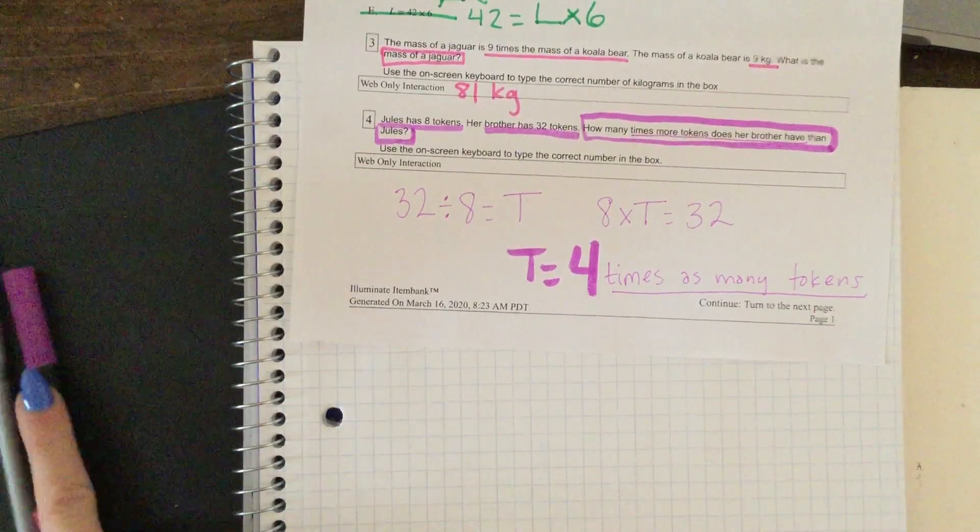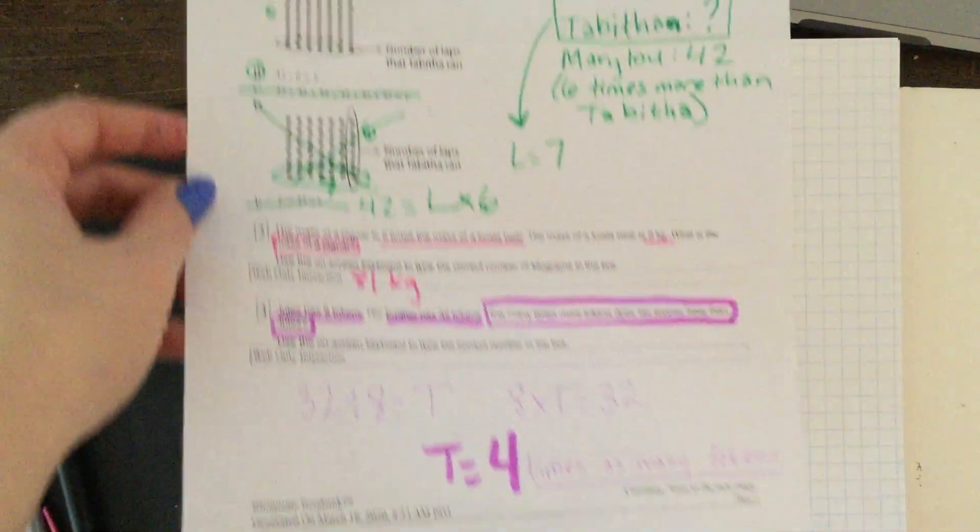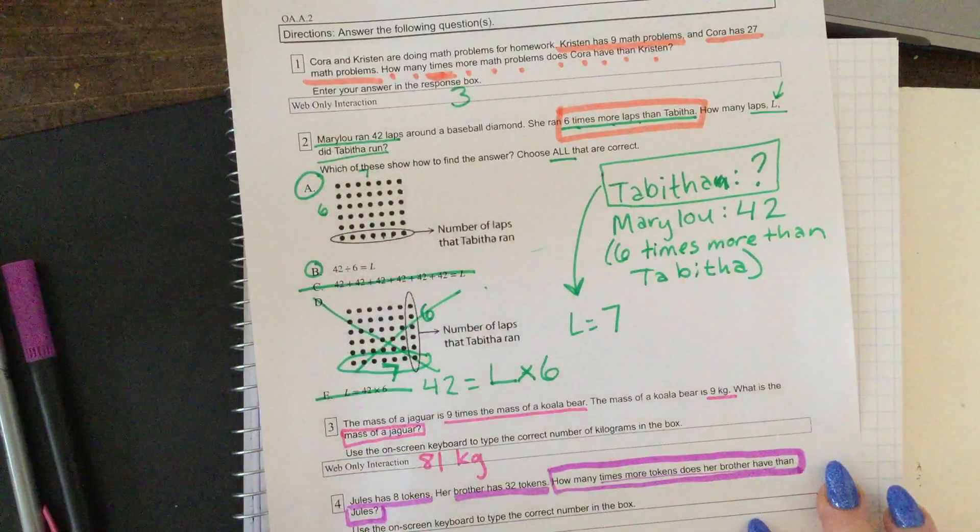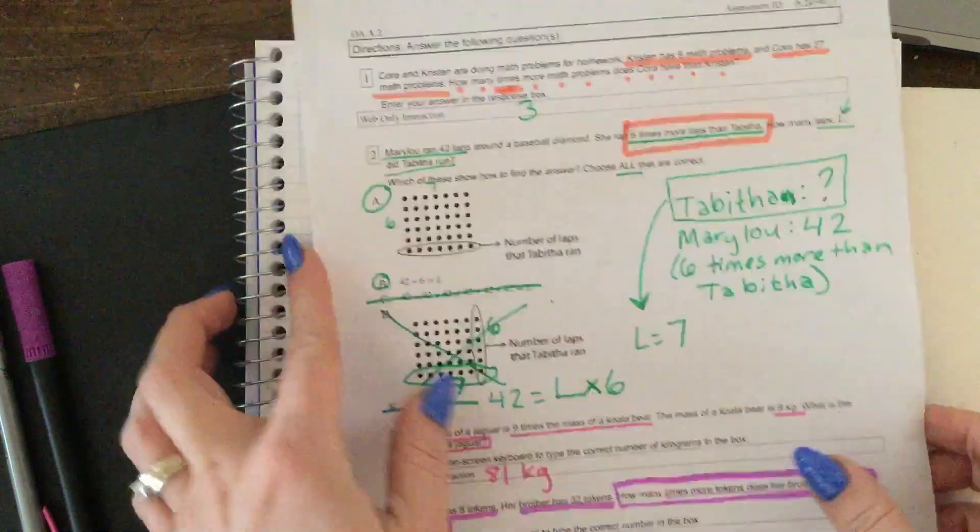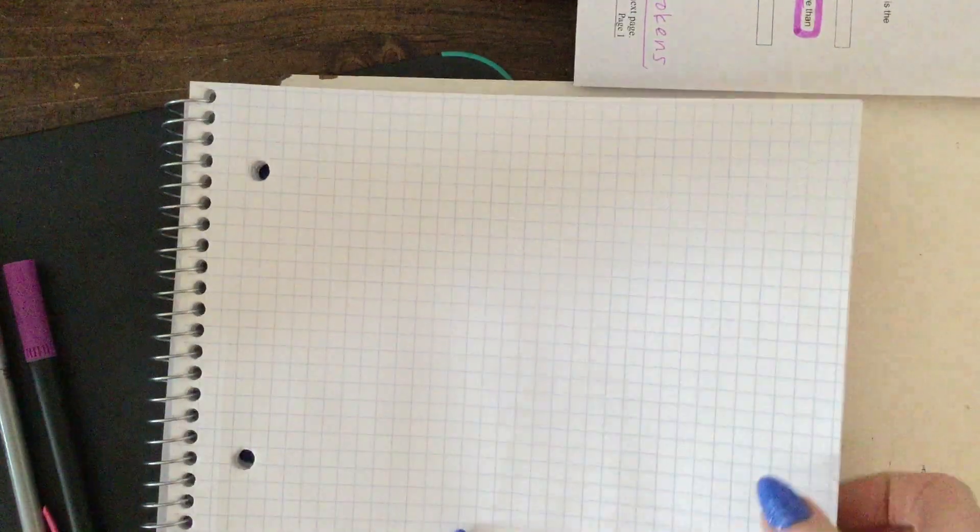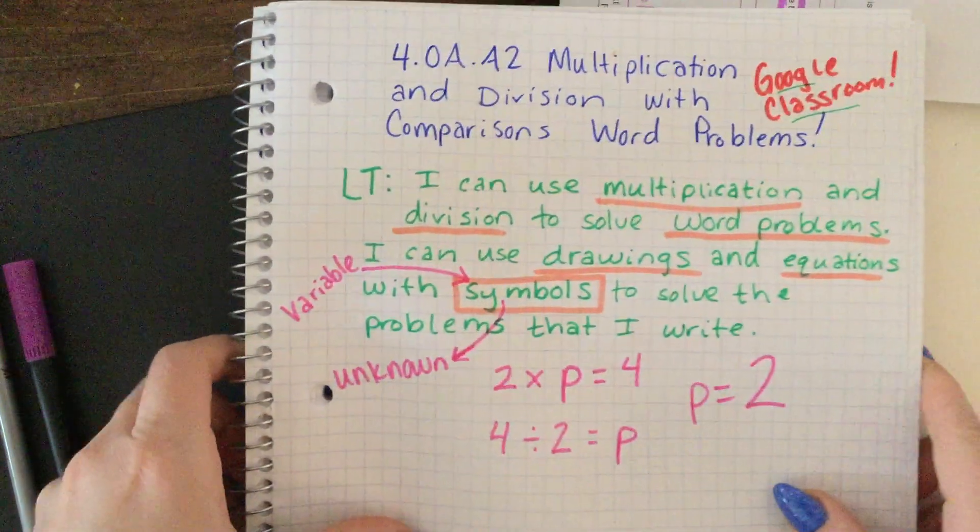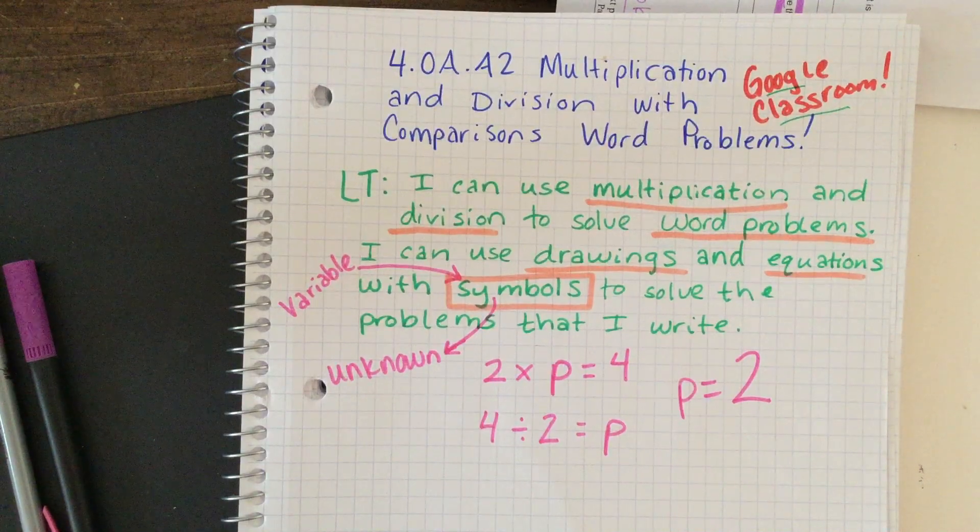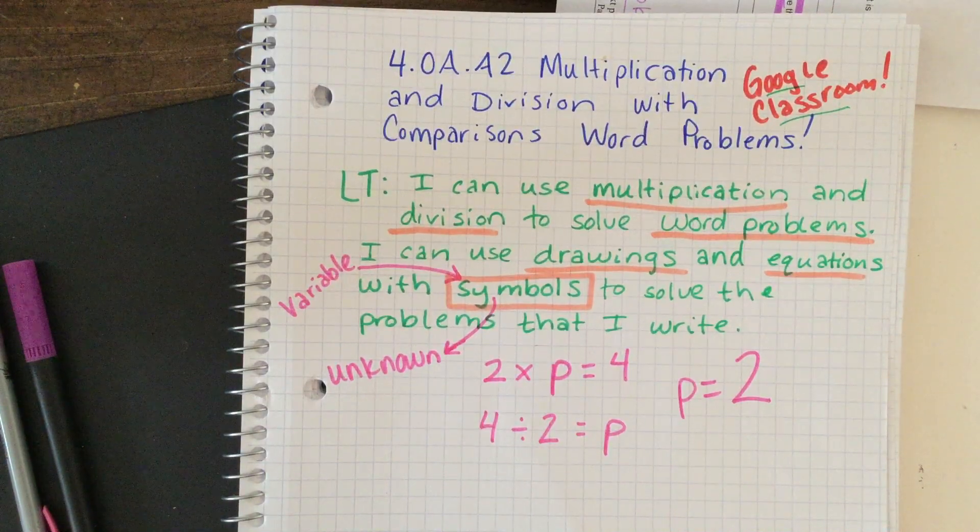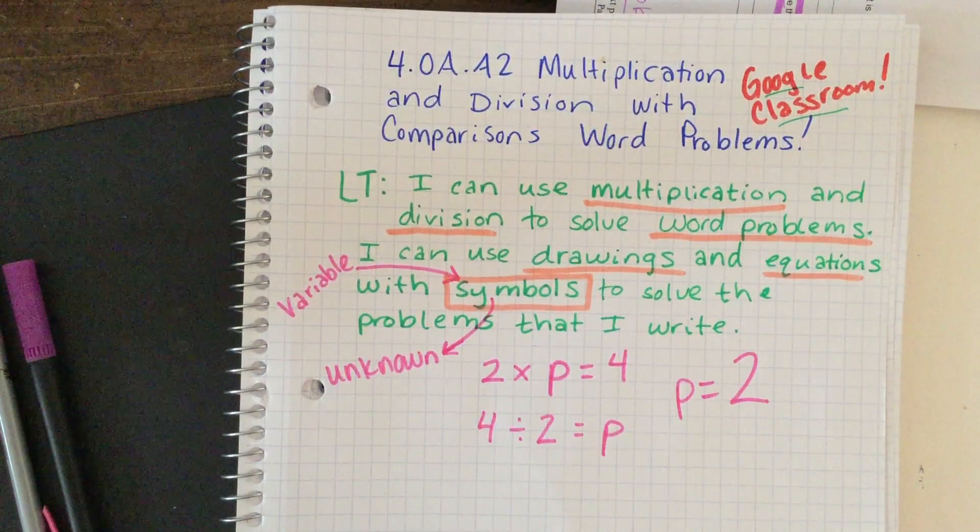All right friends, so you have solved four problems with me. These four problems are helping you meet today's review target, which is: I can use multiplication and division to solve word problems. I can use drawings and equations with symbols or variables to solve the problems that I write.